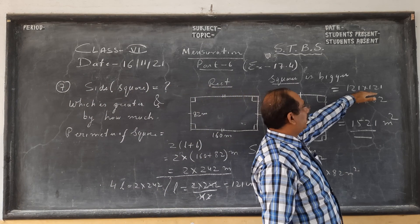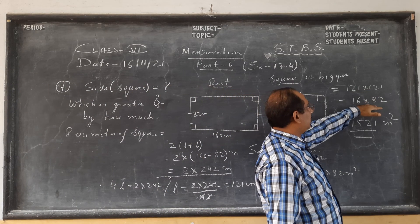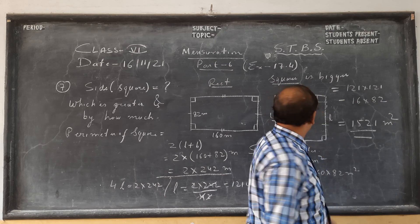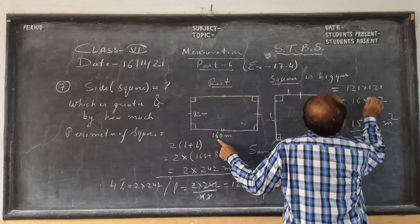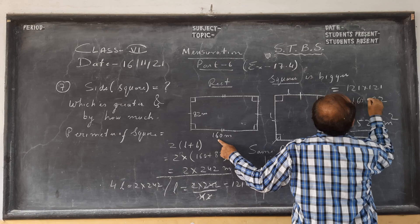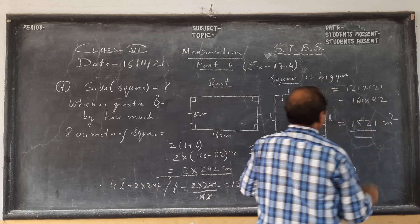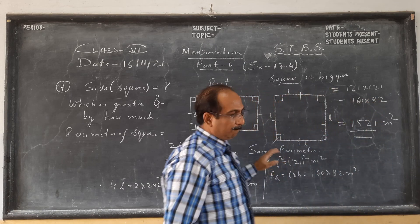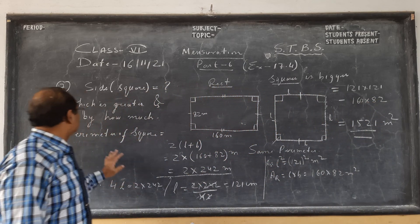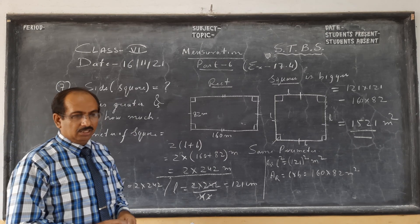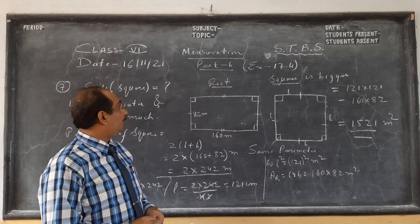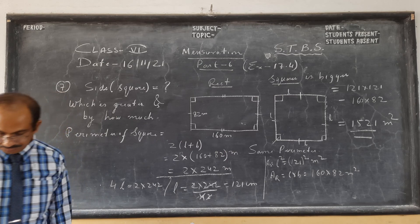So the square plot has greater area by 1521 meter square. Multiply 121 into 121 minus 160 into 82 — watch out for silly mistakes. So this was question number 7. Kindly pause the video and copy, then we move on to the next sum.